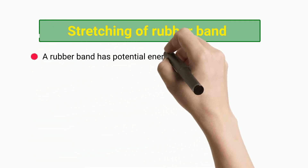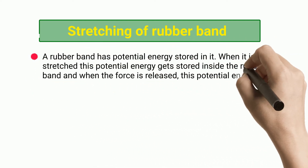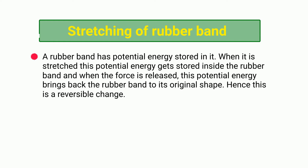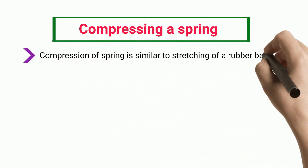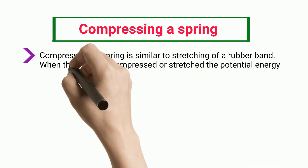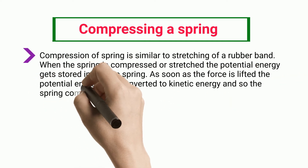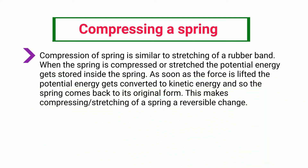Stretching of Rubber Band: a rubber band has potential energy stored in it. When it is stretched, this potential energy gets stored inside the rubber band, and when the force is released, this potential energy brings back the rubber band to its original shape. Hence, this is a reversible change. Compressing a Spring: compression of a spring is similar to stretching of a rubber band. When the spring is compressed or stretched, the potential energy gets stored inside the spring. As soon as the force is lifted, the potential energy gets converted to kinetic energy and so the spring comes back to its original form, making compressing or stretching of a spring a reversible change.